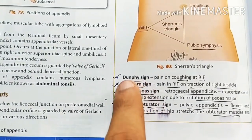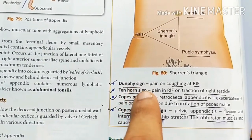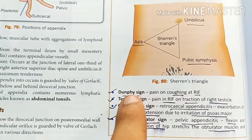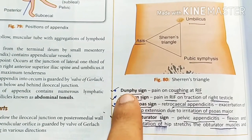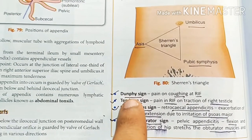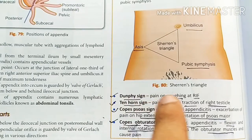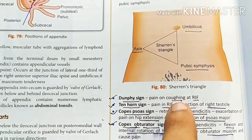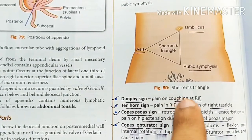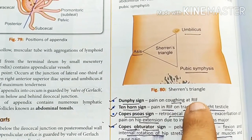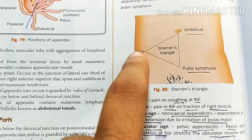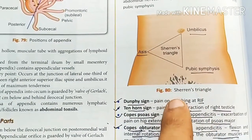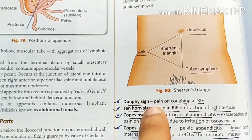Next is Dunphy sign. Dunphy sign means that when you cough, you get pain on the right iliac fossa. So when you are coughing and you get pain in the RIF, that is called Dunphy sign.